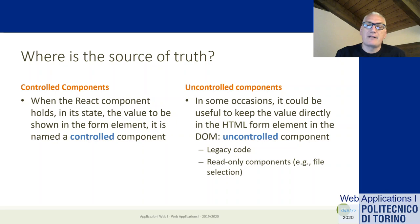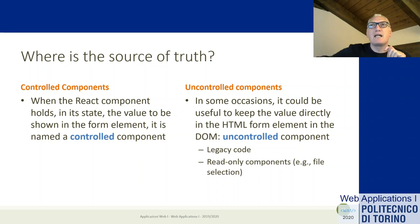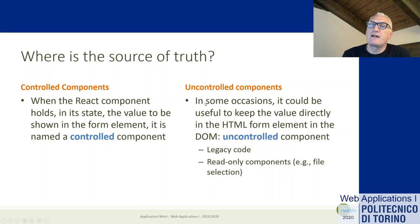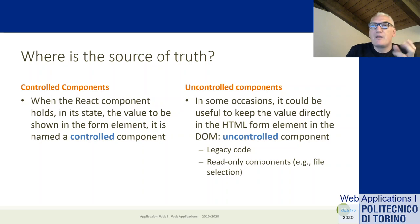A controlled component is a standard React component where the component's state is the single source of truth. Every modification in the form must go through the state — every letter the user types changes the state, and the state change updates the input element. An uncontrolled component, on the other hand, lets the HTML behave normally — the DOM node works as it normally would. This is used for legacy components or special types, but you'll need tricks to read the final value.